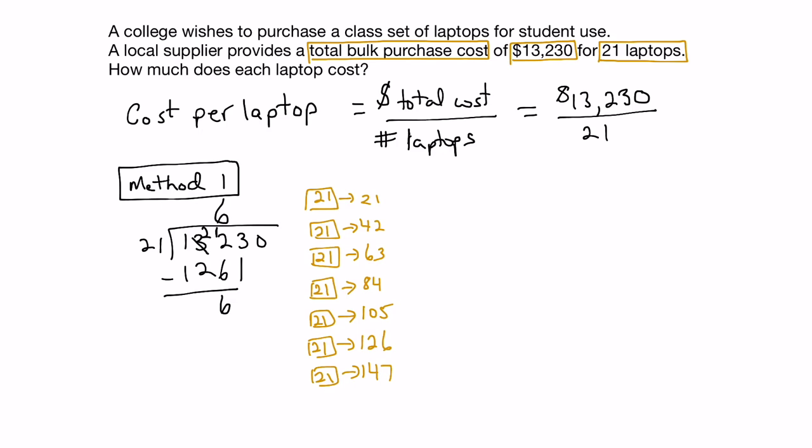Then we bring down the next digit, the 3, and ask ourselves how many times does 21 go into 63. Looking at our multiples of 21, 3 groups of 21 is 63. So 63 represents 3 groups of 21. Then we subtract these numbers and we're left with 0.